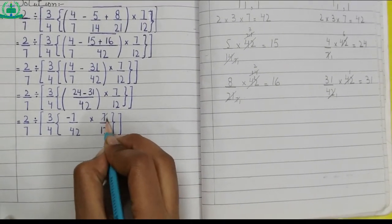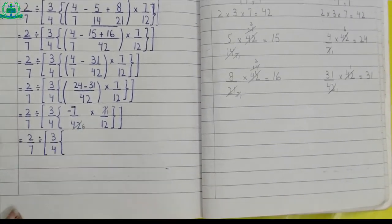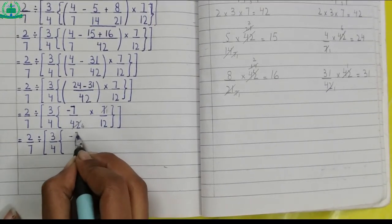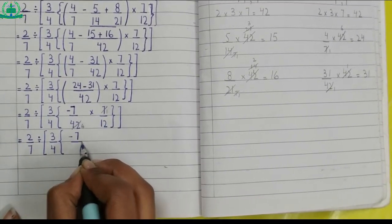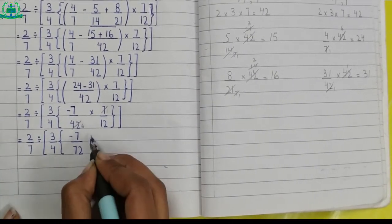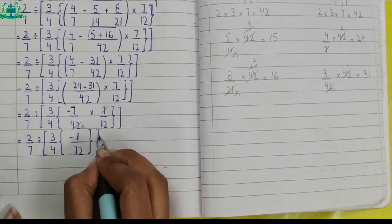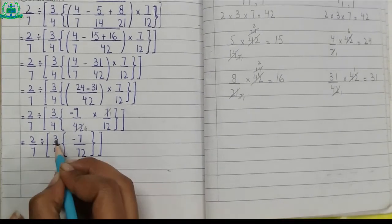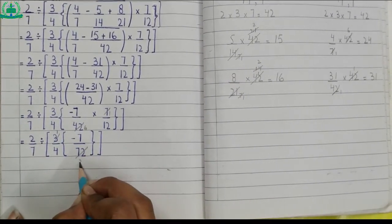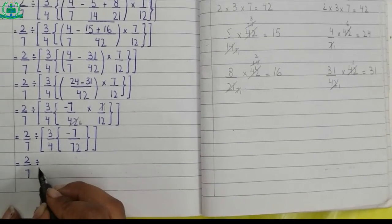Seven once a seven, seven seven six of 42. Minus seven multiply by one makes minus seven, so we write minus seven. Six multiply by 12 makes 72, so we write 72. Three ones are three, three twos are six. Remaining part of the question as it is.